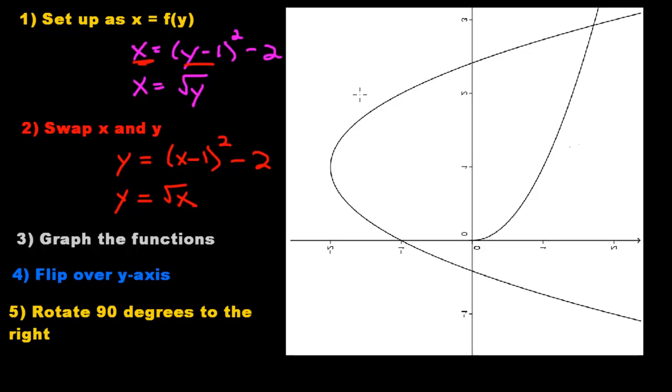And this is what you get. Now all we're going to do is relabel everything. So I've erased the functions. Now I'm just going to put in my own functions again. So we had x equals y minus 1 squared minus 2. And that would be this. And then over here we'd have x equals the square root of y.